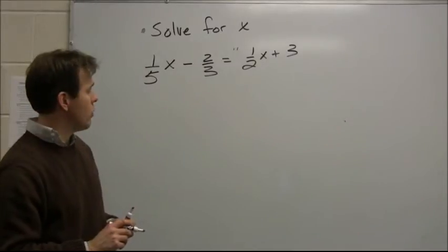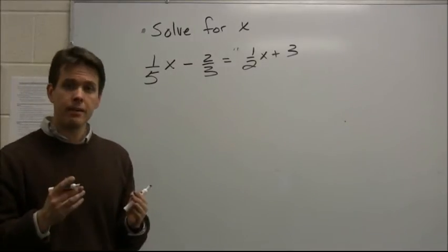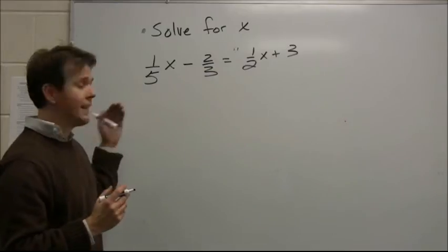One-fifth x minus two-thirds equals one-half x plus three. Again, fraction nightmare for many students, but we can handle this, right?